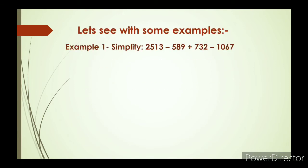Example 1: Simplify 2513 minus 589 plus 732 minus 1067. Here you can see that before 2513 no sign is given, so we will take this number as having a positive sign.